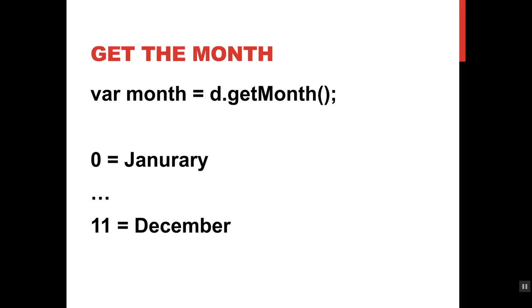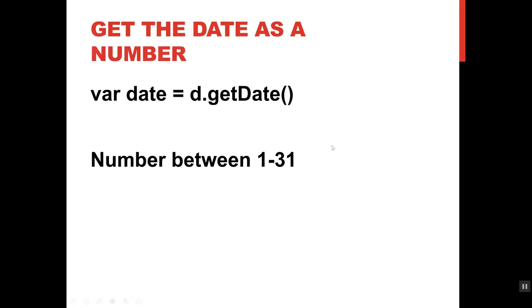These values are off by one from the month values we typically use in calendars, so be aware of that. You can get the date—as in, what number day in the month is this—by using the method getDate(). It will give you a number between 1 and 31. Obviously, if the month doesn't have 31 days, it will give you a lower number.